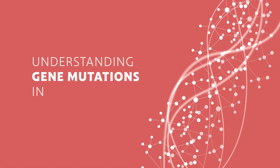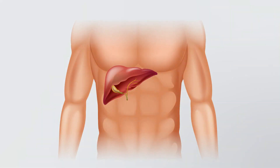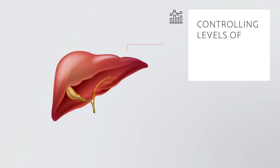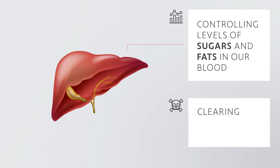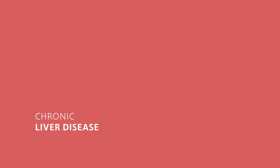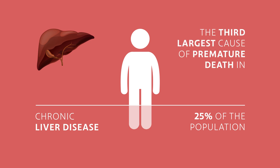Understanding gene mutations in chronic liver disease. The liver plays a vital role in keeping us healthy by controlling levels of sugars and fats in our blood, as well as clearing the blood of toxins. Chronic liver disease affects around 25 percent of the population and is reported to be the third largest cause of premature death in the UK.